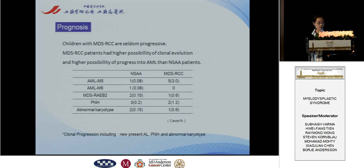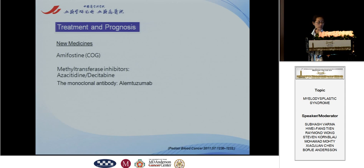We also followed up this group of patients and found that children with RCC seldom progress. However, RCC patients had a higher possibility of clonal evolution and a higher possibility of progression into AML than non-severe aplastic anemia patients. We found that 3% of patients transformed to M5 and other acute leukemia subtypes. Some new agents have been used in MDS, but mostly in adults, and data in children remains rare.